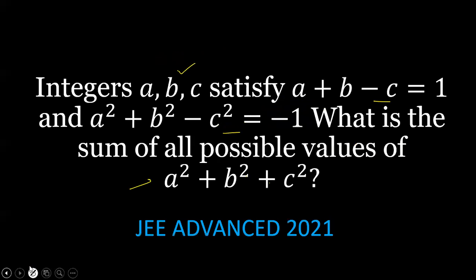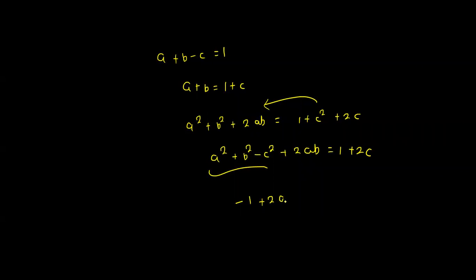We're given that a² + b² - c² = -1. So minus 1 plus 2ab equals 1 plus 2c. Solving this equation gives ab equals 1 plus c.